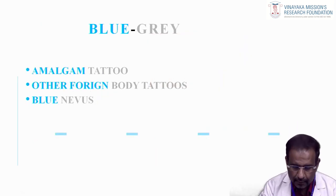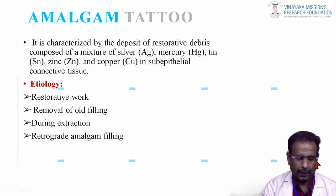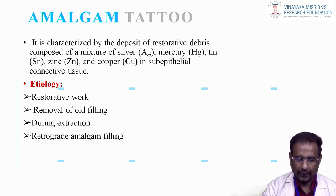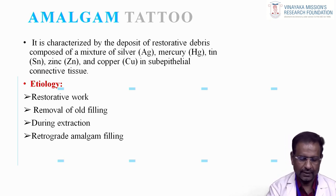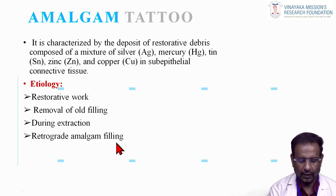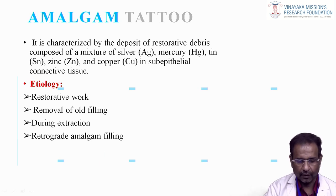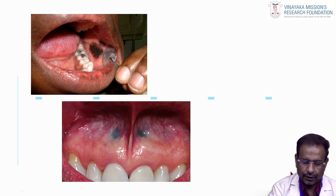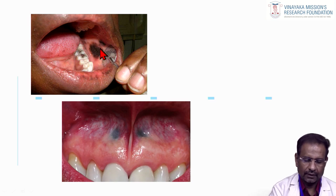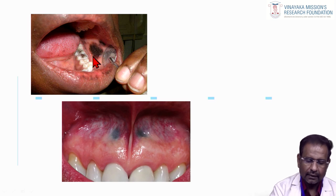Under blue-gray lesions, first is amalgam tattoo. Amalgam material is commonly used in dentistry. It is characterized by deposits of restorative debris — a mixture of silver, mercury, tin, zinc, and copper — in sub-epithelial connective tissue. The etiology includes restorative work, endodontics, removal of old fillings during extraction, and retrograde amalgam filling. In the picture, a silver amalgam filling is seen in the molar region with a brown lesion in the adjacent mucosa — that is the amalgam tattoo.